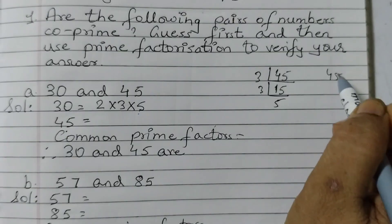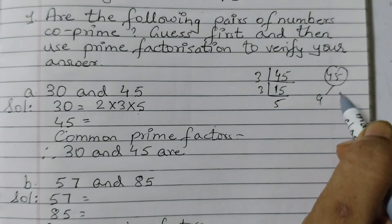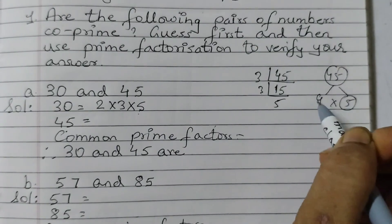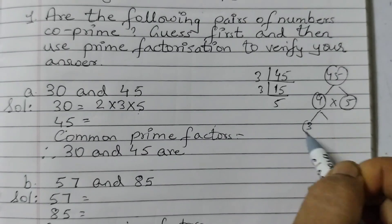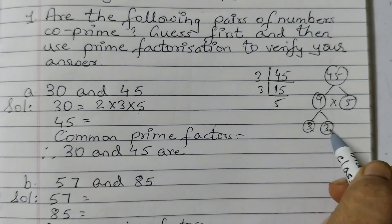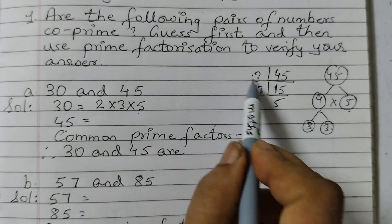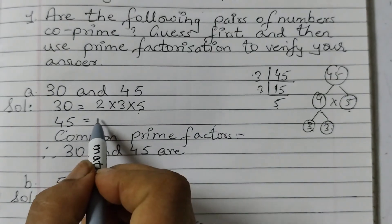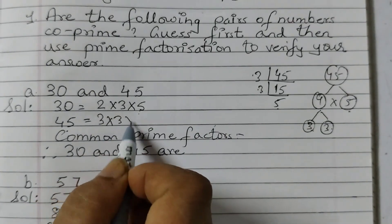If I do it the other way, it will be 45 can be written as 9 into 5. 9 can be written as 3 into 3. So 3, 3, 5, 3, 3, 5. So 3 into 3 into 5.